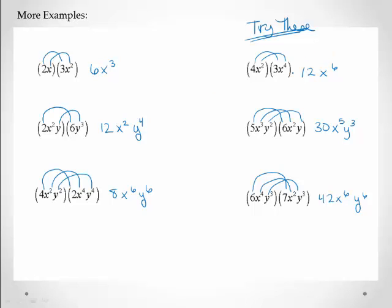So I went ahead and I wrote in the multiplication lines. You don't have to do this but sometimes it helps just to keep track of what's being multiplied by what. And for the first one I get 12x to the 6th. For the second one I get 30x to the 5th y to the 3rd. For the last one I get 42x to the 6th y to the 6th.